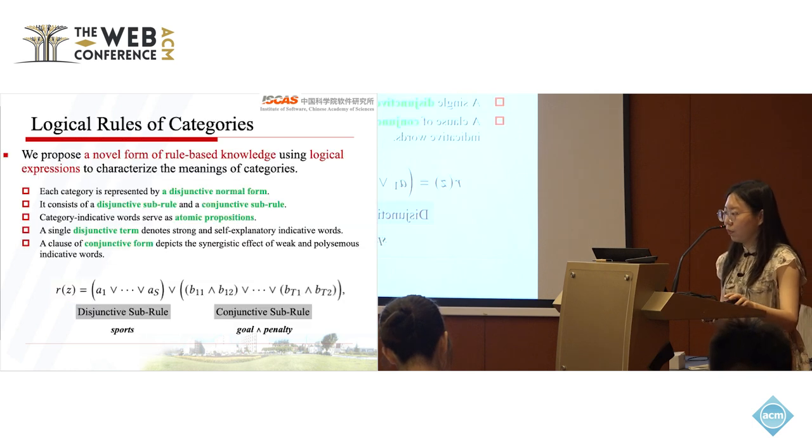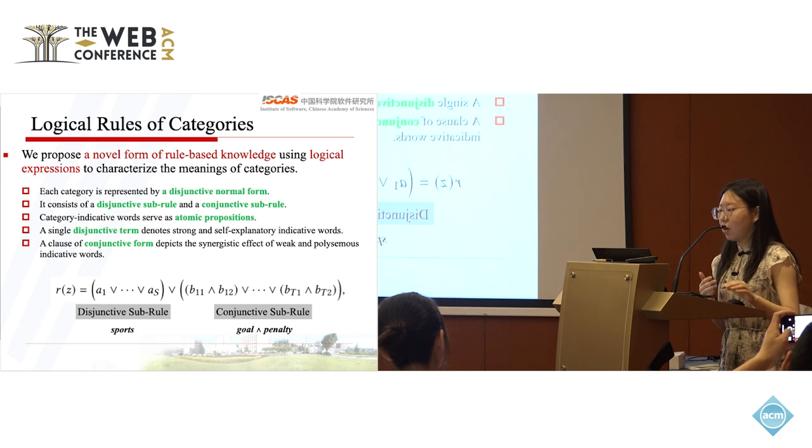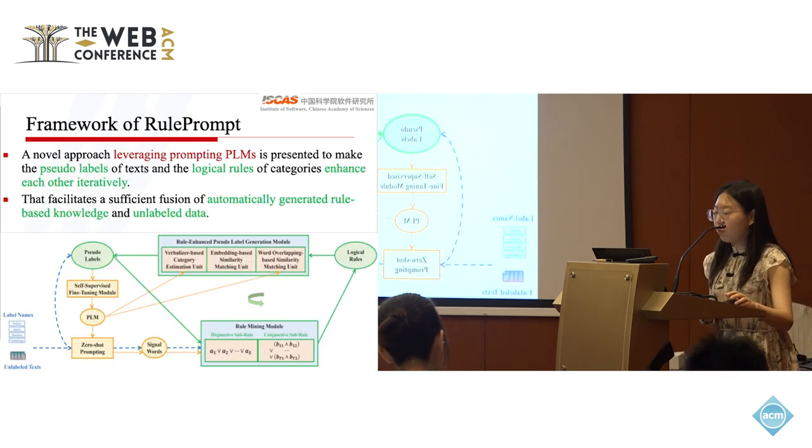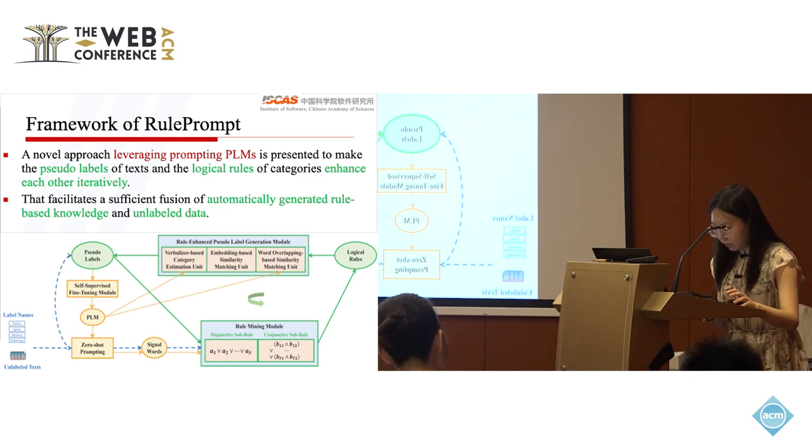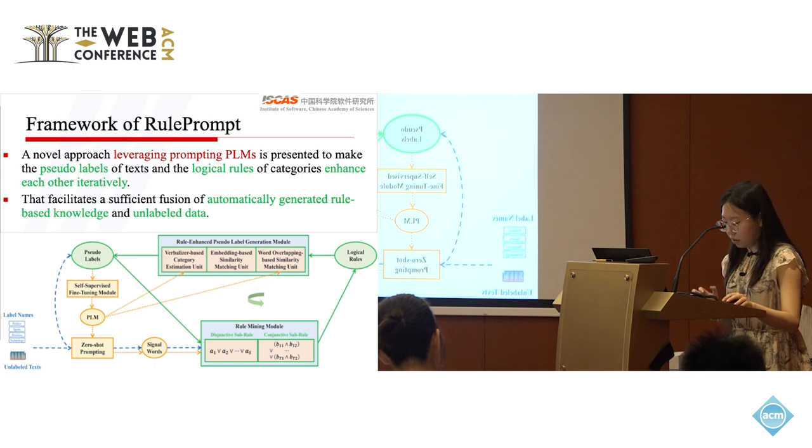Here is our proposed model. First, we propose a normal form of rule-based knowledge using logical expression to capture the meaning of categories. Each category is represented by a disjunctive normal form and consists of disjunctive sub-rules and conjunctive sub-rules. Here is the framework for Rule Prompt. At first, with only label names and unlabeled text, we use a zero-shot prompting method to generate pseudo-labels and signal words. Then, the approach enters the self-iteration between the pseudo-labels and the logical rules.